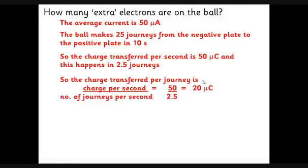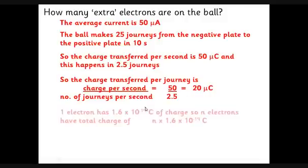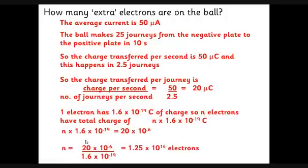The trickiest question is: how many electrons is it to do that? We know that one electron has a charge of 1.6 × 10⁻¹⁹ coulombs - you'll get given that number on the data sheet in the exam. So n electrons must have a total charge of n × 1.6 × 10⁻¹⁹. We know each journey is taking 20 microcoulombs, so 20 × 10⁻⁶ coulombs. Then just simple algebra: n = 20 × 10⁻⁶ / 1.6 × 10⁻¹⁹, which means every single journey we get 1.25 × 10¹⁴ electrons. That's 125 million million electrons every time the ball goes from one plate to the other.